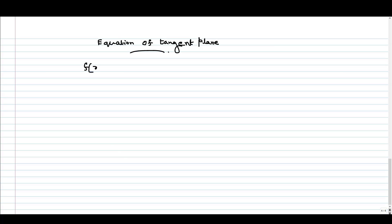Let us consider the function f. Suppose z equal to f is given — this is a function of two variables — and suppose we want to find the tangent of this surface, denoted by this function, at the point p0 which is given as (x0, y0). Now, p0 has to be from the domain of f; otherwise how can we find the tangent of it. So this point is in the domain of f. Now we want to find the equation of the tangent at this point of this surface represented by this function.